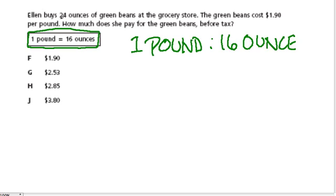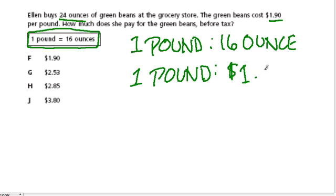We know that Ellen buys 24 ounces of green beans at the grocery store. The green beans cost $1.90 per pound. So we have a second ratio to think about, which is that every one pound costs $1.90.